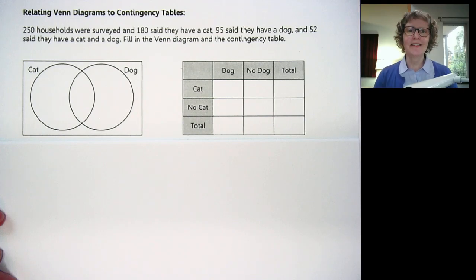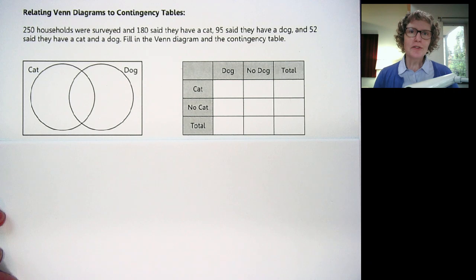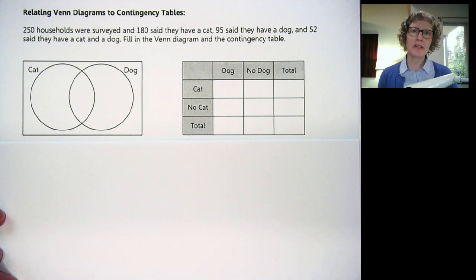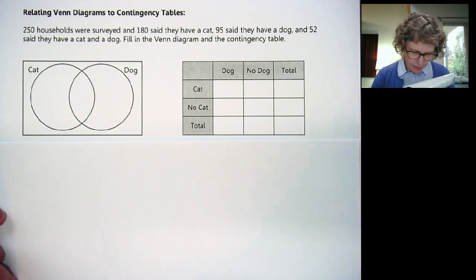Hi students. This video is about contingency tables and we're going to start learning about probability using contingency tables. First I want to start with Venn diagrams, something we've done before. I've got a problem here and I want to use the Venn diagram and then show you how that relates to a contingency table. So let's read this.